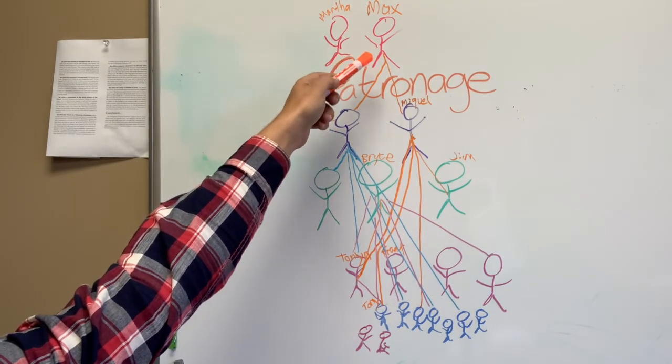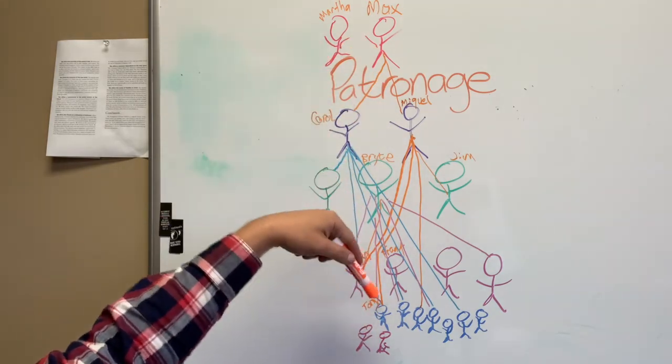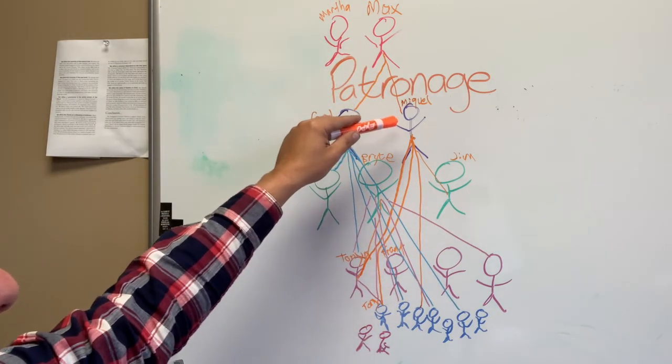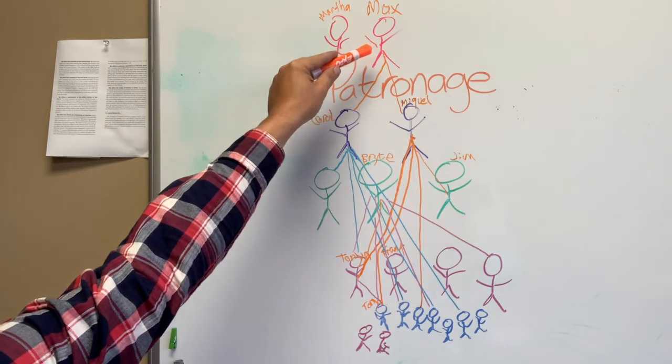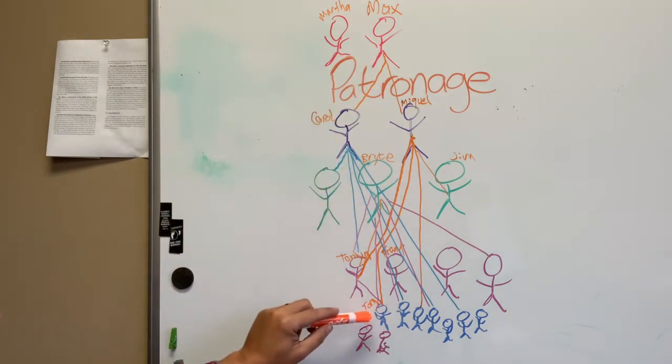And Max, being a benevolent patron that we all know that he is, will say, of course, Miguel, of course, I will help your client Tony to get access to less expensive leather. And Miguel has now strengthened his relationship with Max and Max has strengthened his relationship with Miguel and Miguel has strengthened his relationship with Tony.